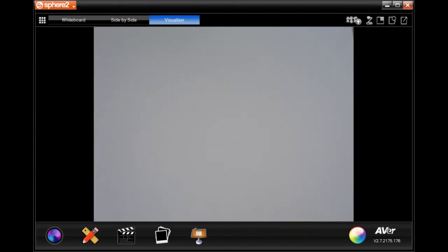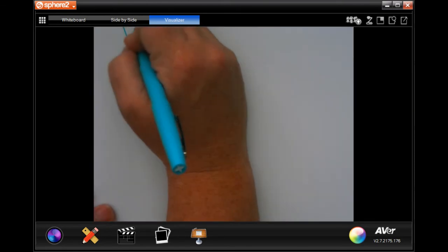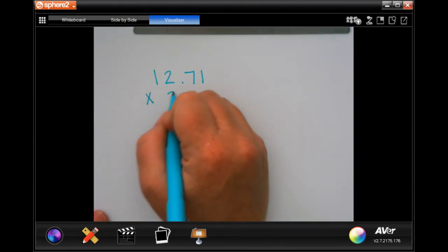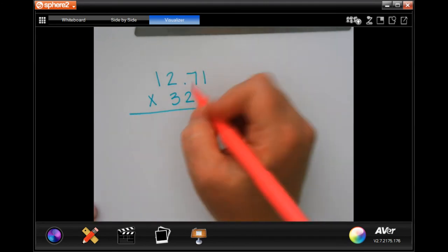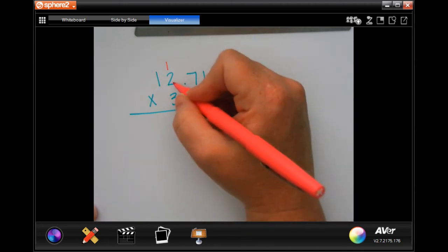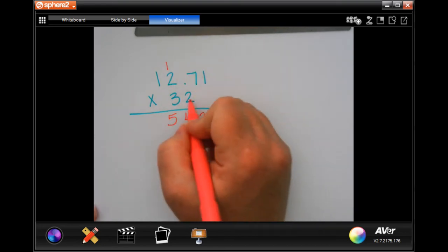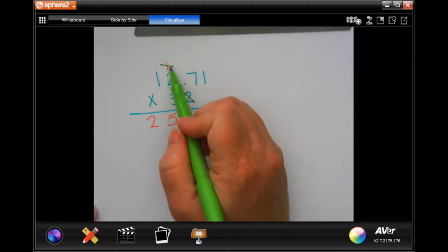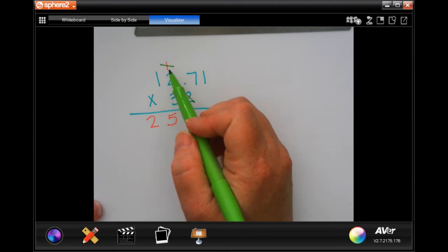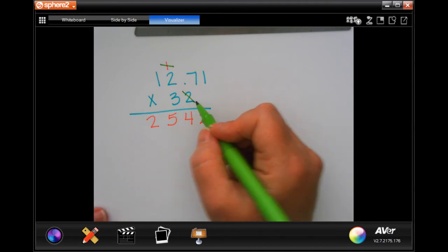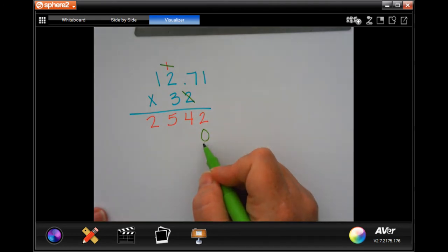So I'm going to do one on scrap paper so that it's a little bit clearer for you guys to see. So 12.71 times 32. So 2 times 1 is 2. 2 times 7 is 14. 4 down, carry 1. 2 times 2 is 4 plus 1 more is 5. And 2 times 1 is 2. Now I get to go through and tick, pack, toe.